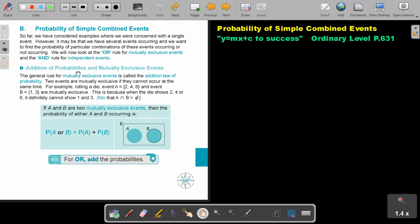The first one, addition of probabilities and mutually exclusive events. The general rule for mutually exclusive events is called the addition law of probability. Two events are mutually exclusive if they cannot occur at the same time. For example, rolling a die, event A will be 2, 4, and 6, all the even numbers on the dies. And event B is 1 and 3, odd numbers on the dies. They are mutually exclusive. This is because when the die shows 2, 4, or 6, it definitely cannot show 1 and 3. So if you represent it as sets, there will be no intersection between the sets. So for OR, you add the probabilities.